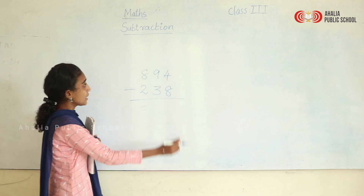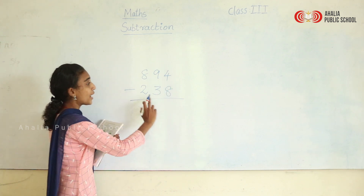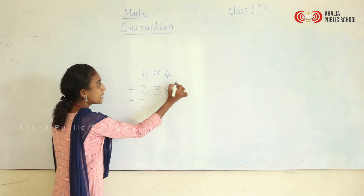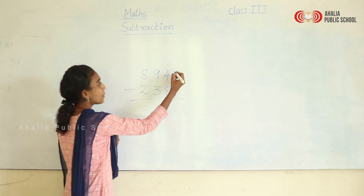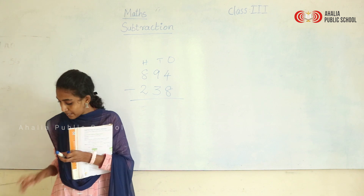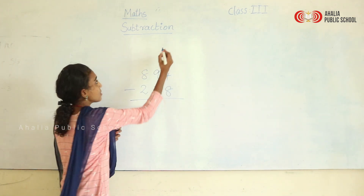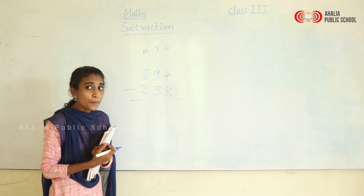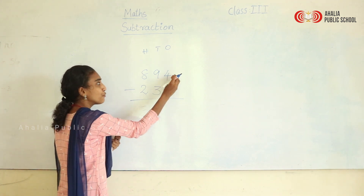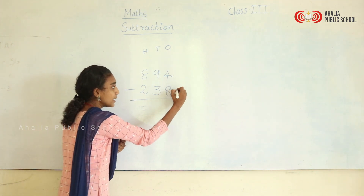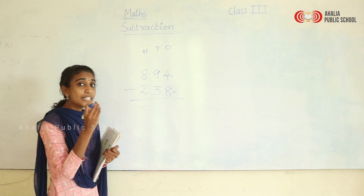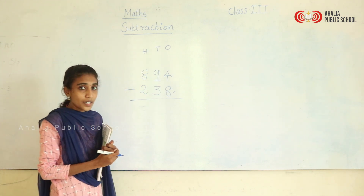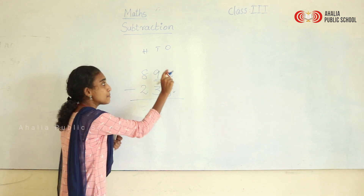Now moving on to the next question: 894 minus 238. Starting from the ones place — 4 minus 8. Is it possible to subtract 8 from 4? No, 4 is the smaller one and 8 is the bigger number. So what we will do is borrow a number from the next place value. We will be borrowing a 1 from the next place value.